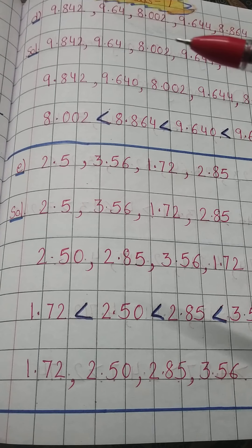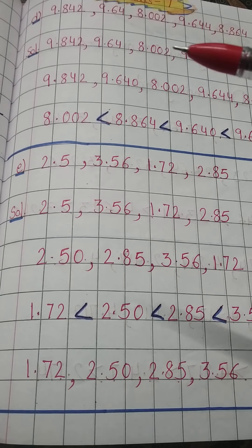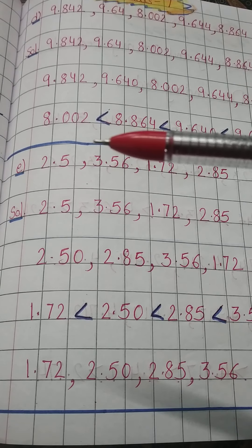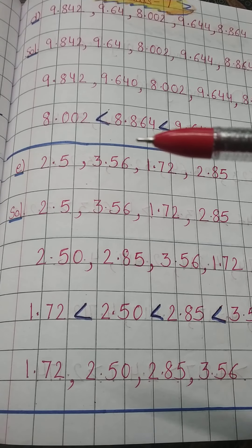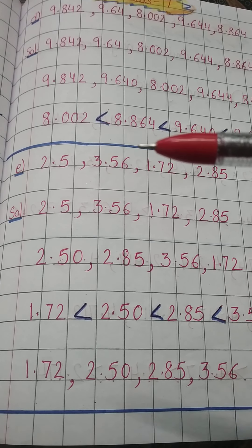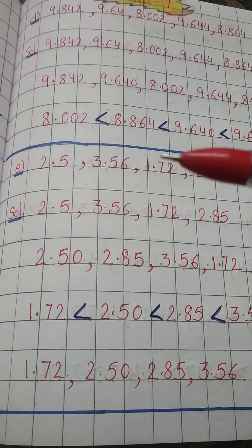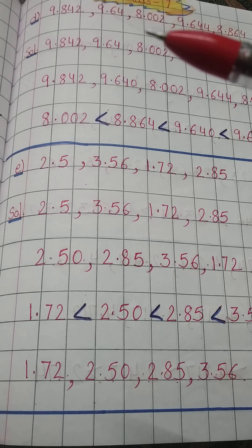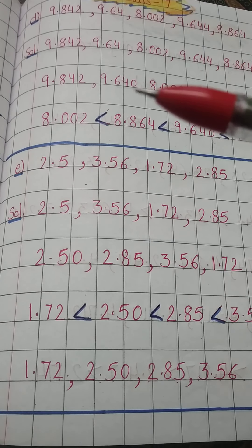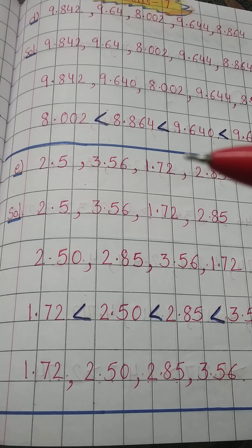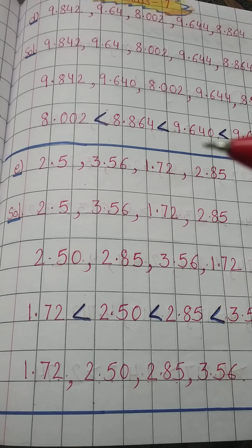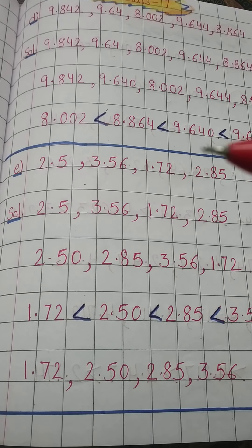So first we will write this one: 8.002, then after this 8.864. And after 8.864 we will compare 9.842, 9.640, 9.644. So 8.002, 6.004, and 6.004, that means 9.642 is lesser.